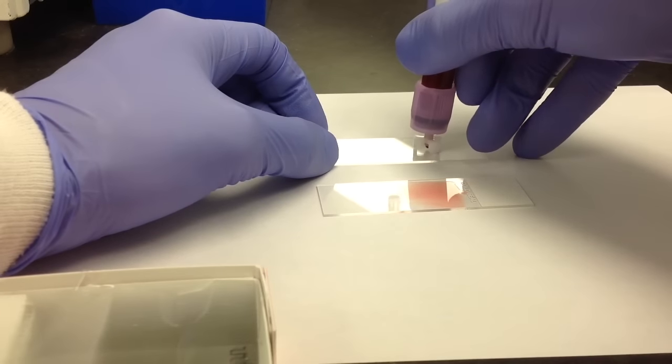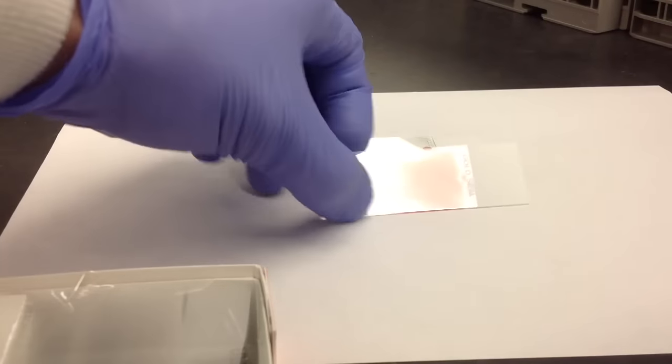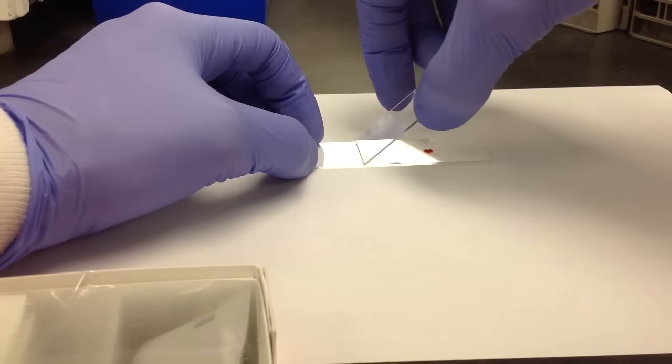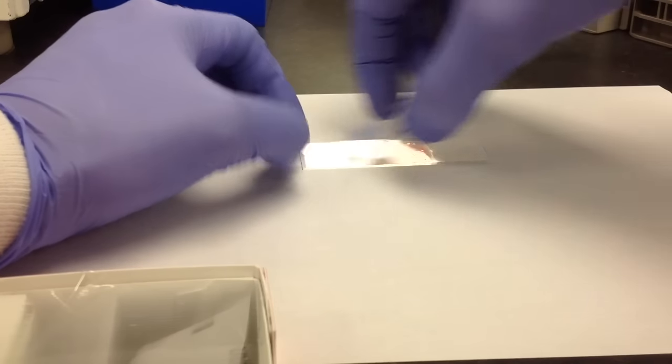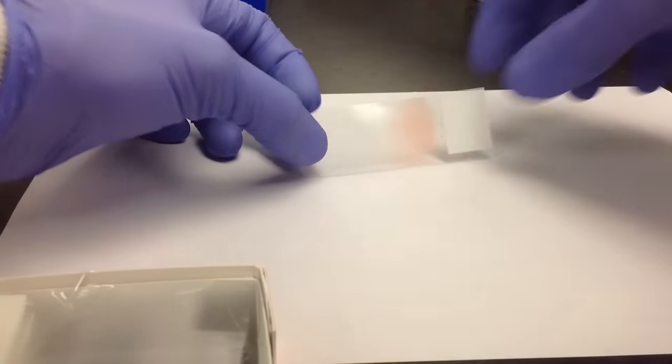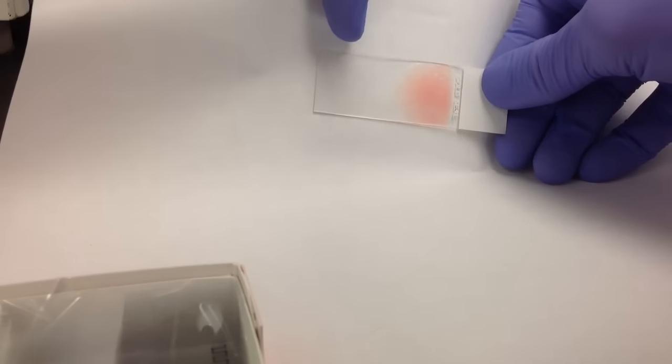As you can see, after I add the drop I'm going to take the slide and hold it at a much larger angle, and this makes it much shorter. This would be useful for somebody with a low hemoglobin. That's how you do it. Thanks for watching.